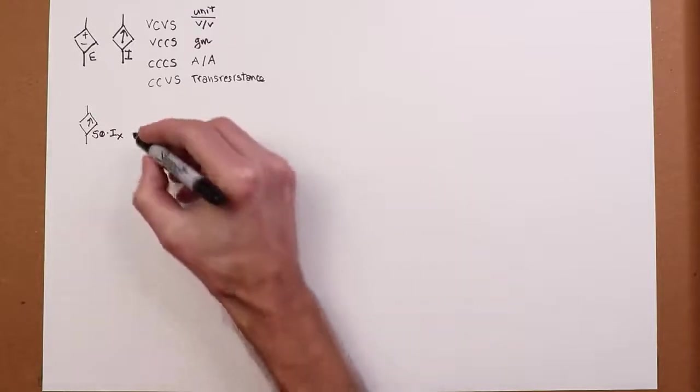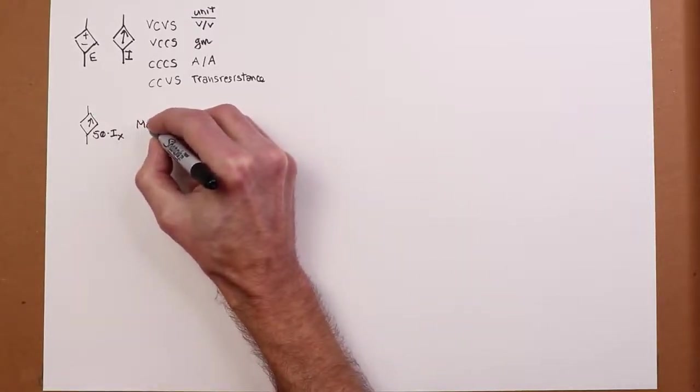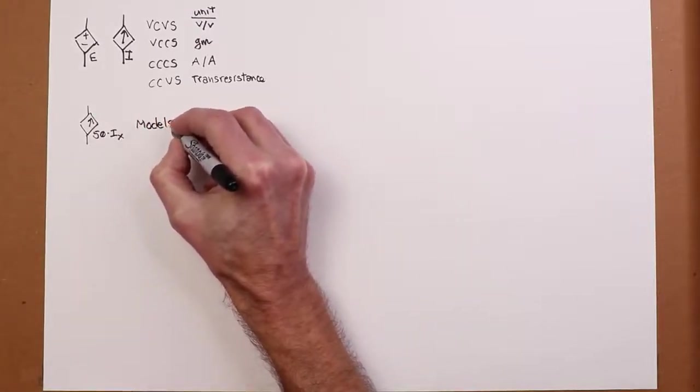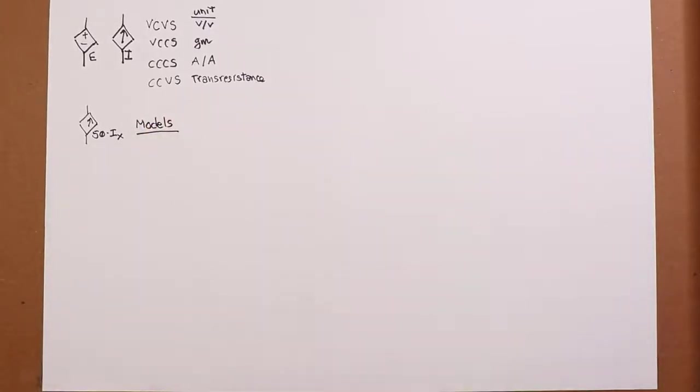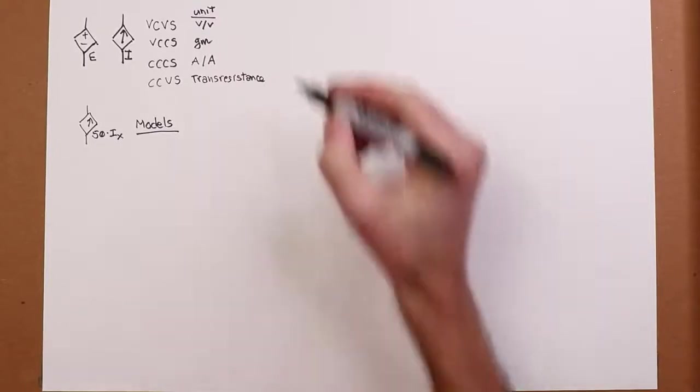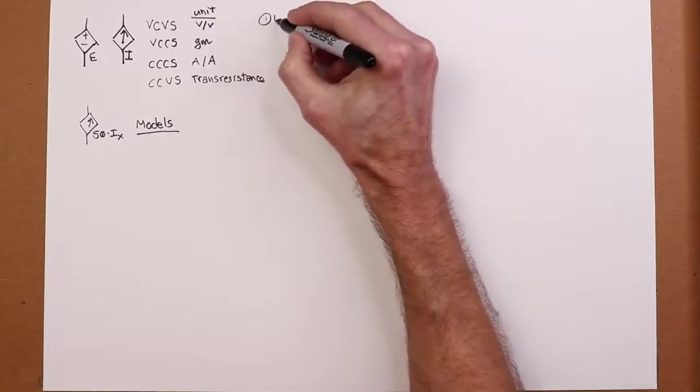Now, we typically use these things for device models, like models for transistors. You don't go out and buy a dependent voltage source, like you would buy a bench power supply. Let's take a look at how we use these in a circuit and how we solve systems that have these dependent sources. Well, there's two basic styles, as I like to think of them. The first one I call uncoupled.